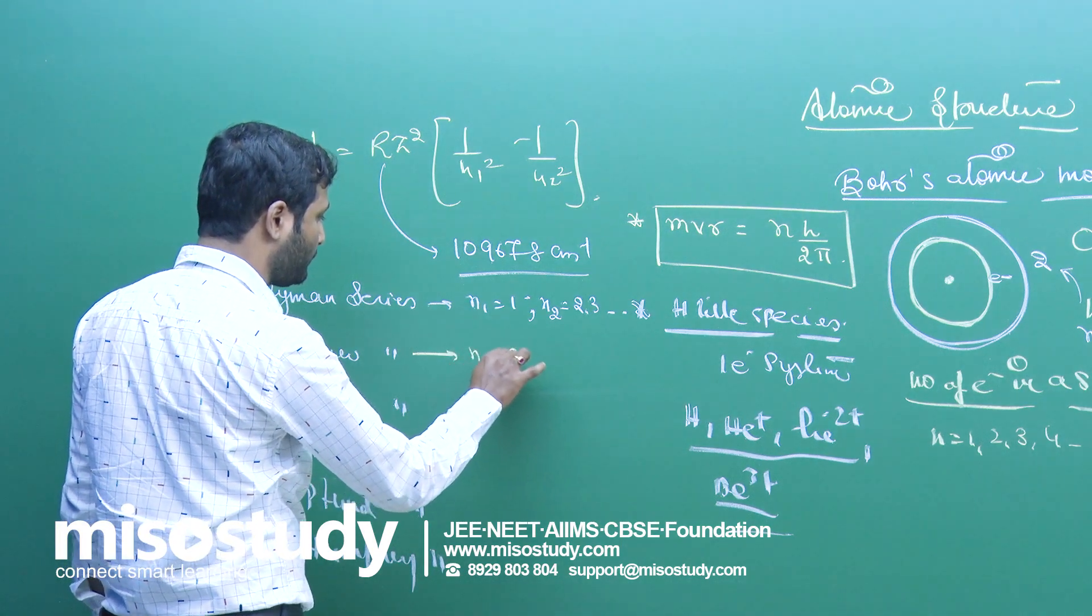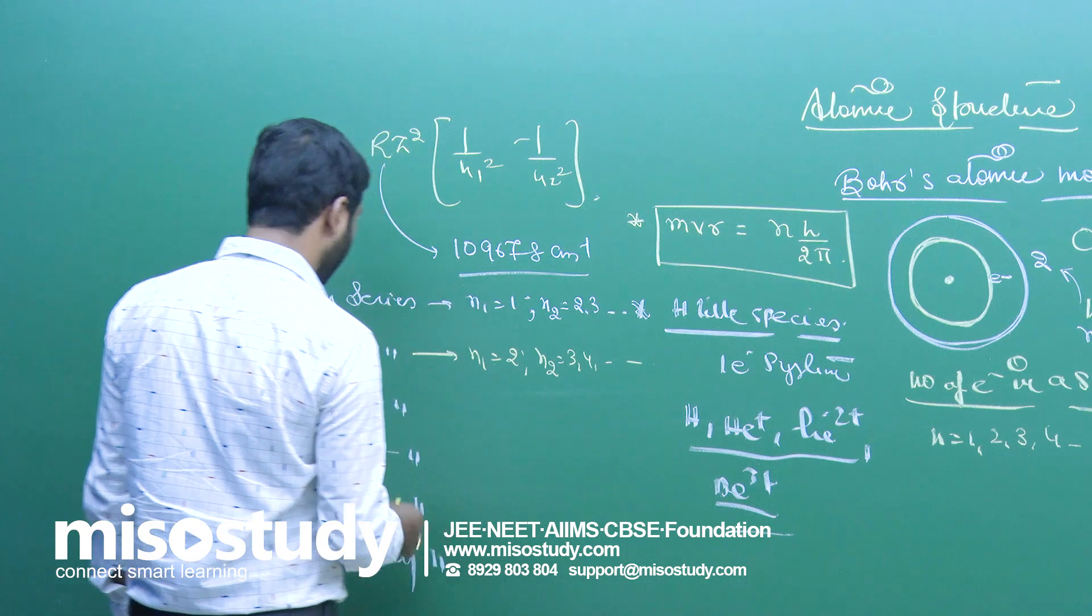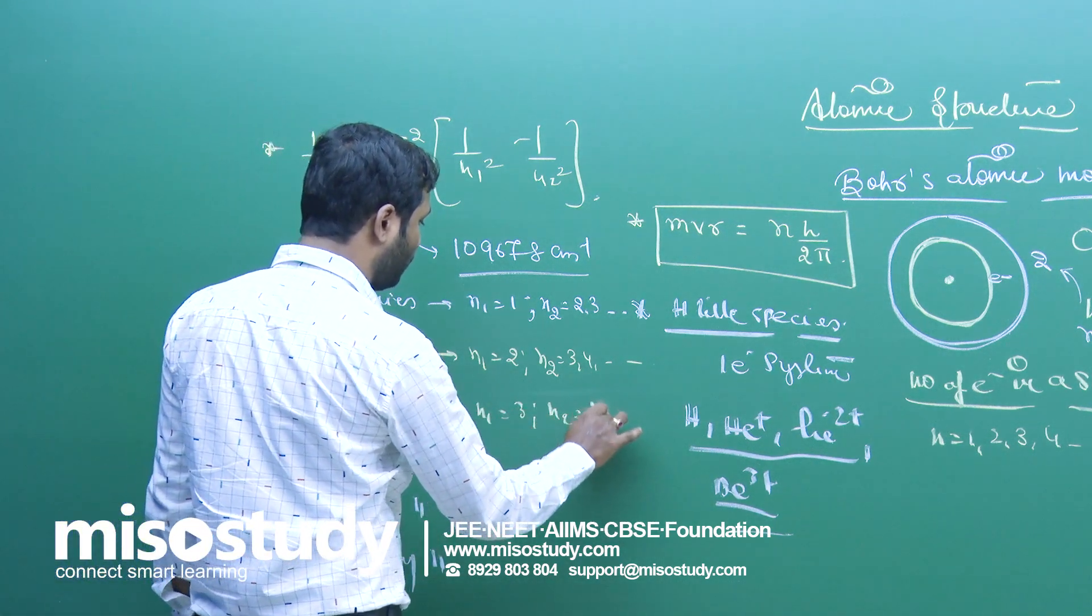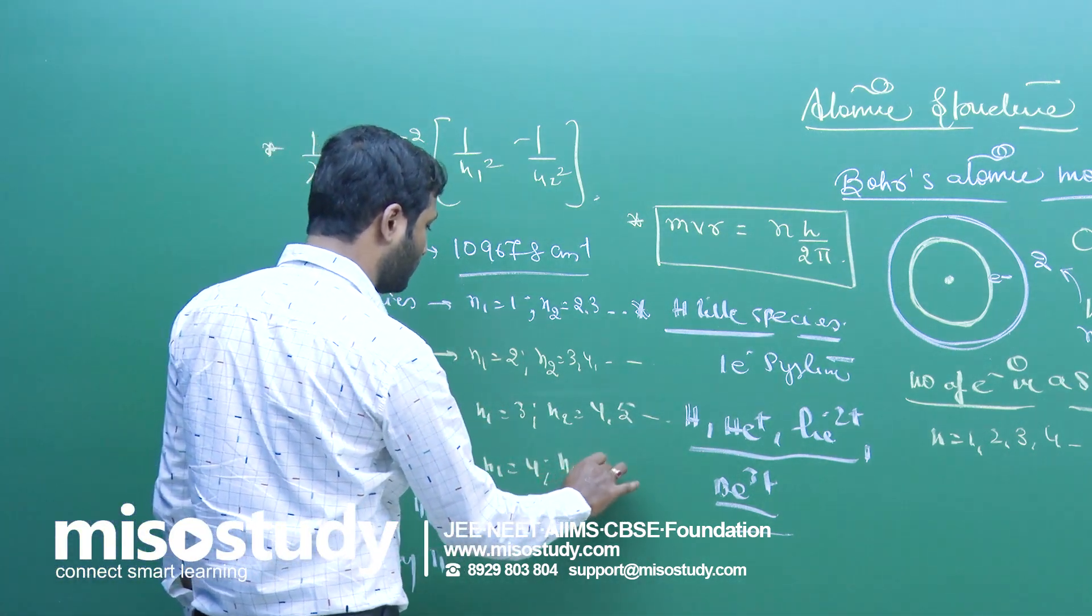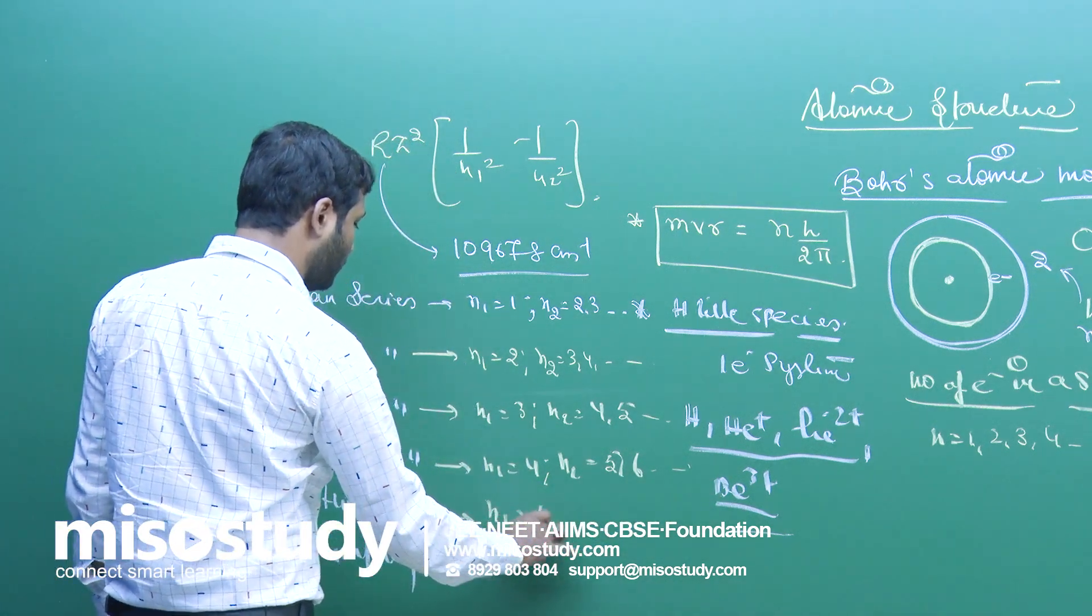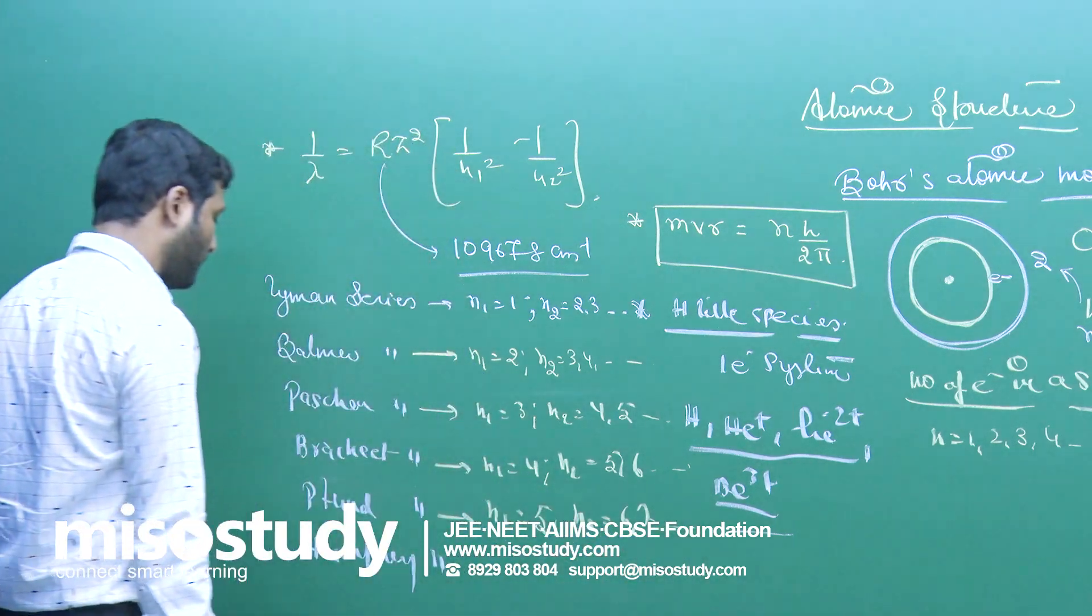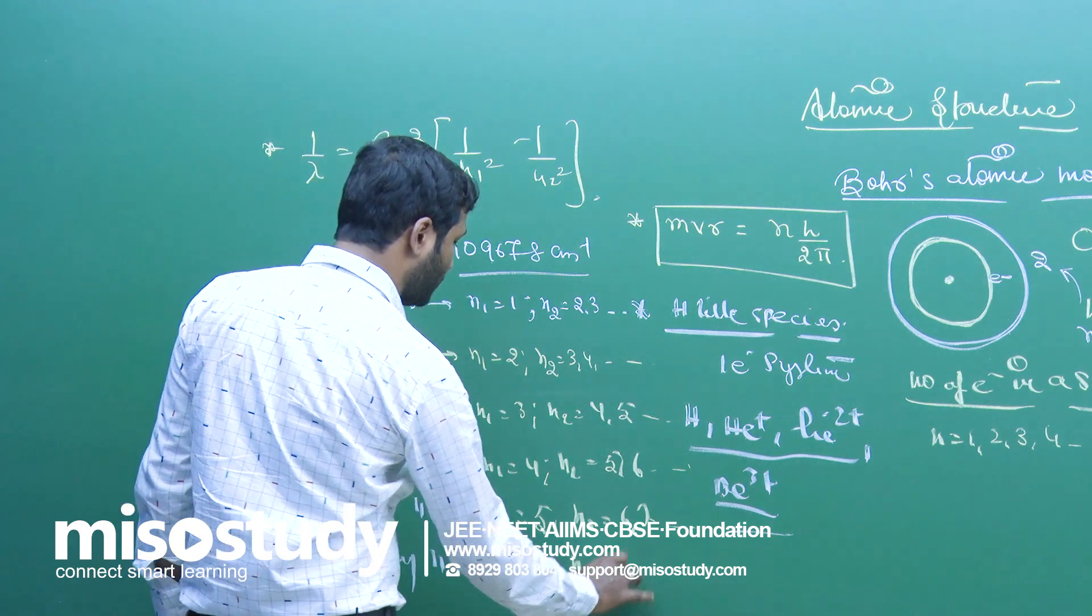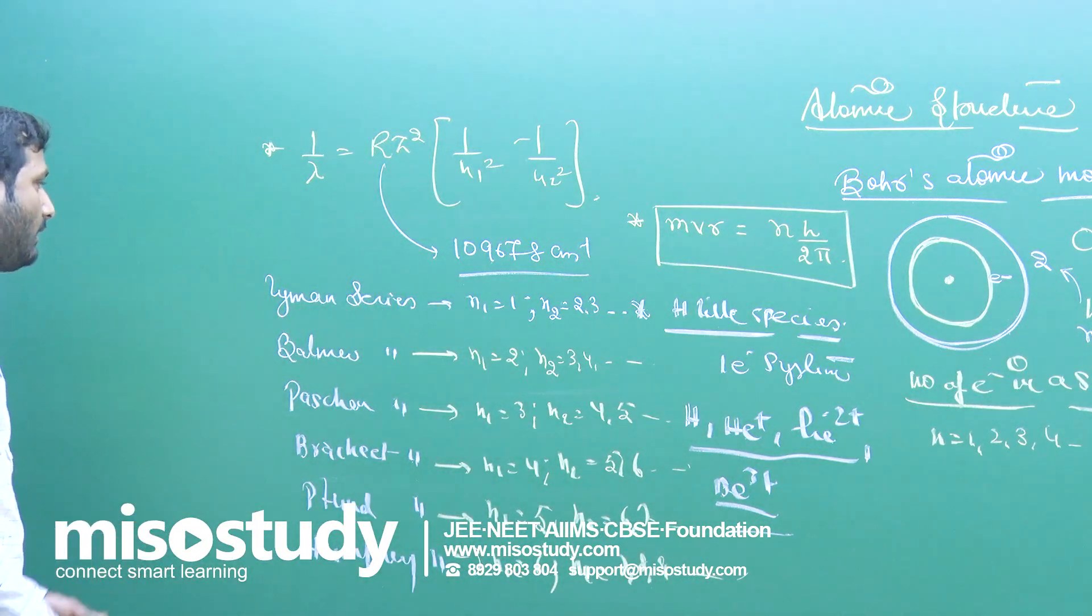Balmer series n1 equals 2, and n2 will be equal to 3, 4 dot dot dot. Paschen series n1 equals 3, n2 equals 4, 5. Brackett series n1 equals 4, n2 equals 5, 6. Pfund series n1 equals 5, n2 equals 6, 7. Humphrey series n1 equals 6, and n2 equals 7, 8, 9.